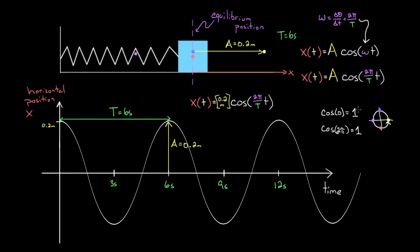If it started down here and went up I'd use sine, because sine starts at zero. But this one started at a maximum, so I have two pi over the period. I can't leave that as a variable—I put in my actual period, which we said was six seconds. Then little t. A lot of times people get confused: what do I plug in for little t? You don't, typically.